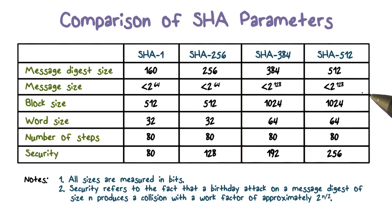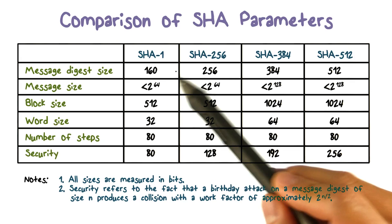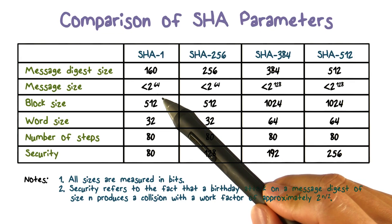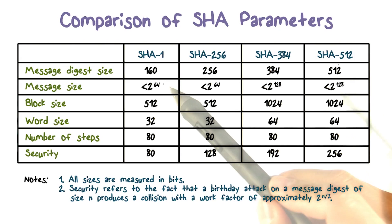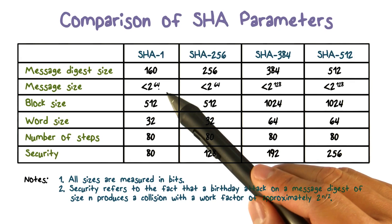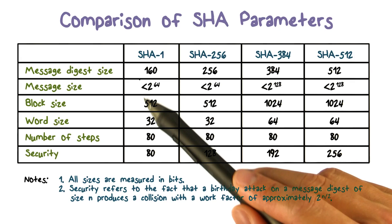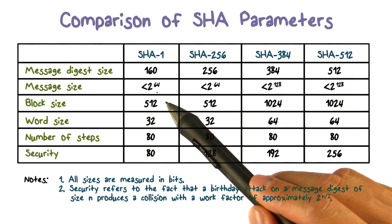Message size is the size limit on the input. You can consider these size limits as not having any effect in practice, because most, if not all, messages will be smaller. For example, even with SHA1, the message size is limited to 2 to the 64, meaning you can hash a message so large it occupies the entire address space of a 64-bit computer.